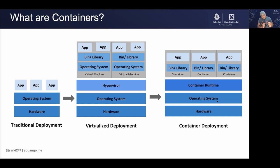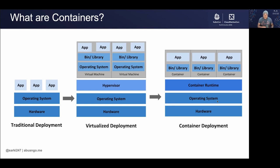The function of the hypervisor is to create isolated environments — virtual machines — that contain an operating system, binaries, and everything necessary for your application to run. A virtual machine is completely isolated from the host operating system and must come with everything the application needs, including the OS. The guest virtual machines do not have access to the host, and the host does not have access to the content in the virtual machines, except if modifications are made.